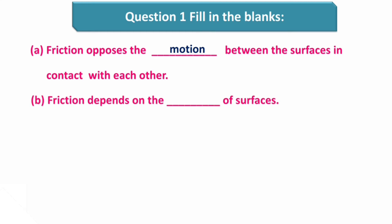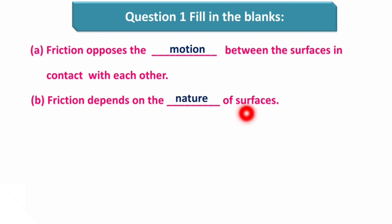Next blank is: friction depends on the dash of surfaces. Friction jo hai, wo surface ki kaunse factor per dependent hai? It depends on the nature of surfaces. Agar surface smooth hai, toh uske upar force of friction kam hoga. But if there is a rough surface, then uske upar force of friction ziyada hota hai. So, it depends on nature of surface.